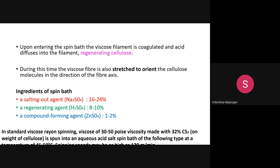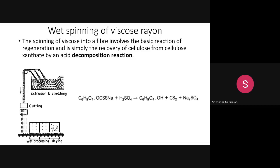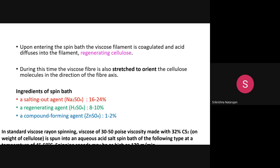The regenerating agent, sulphuric acid, regenerates the viscose filament through an acid decomposition reaction: sodium cellulose xanthate reacts with H₂SO₄ to regenerate cellulose — the viscose rayon cellulose. The pH at which this reaction occurs is critical. Sodium sulphate as the salting-out agent removes excess salts from the bath.